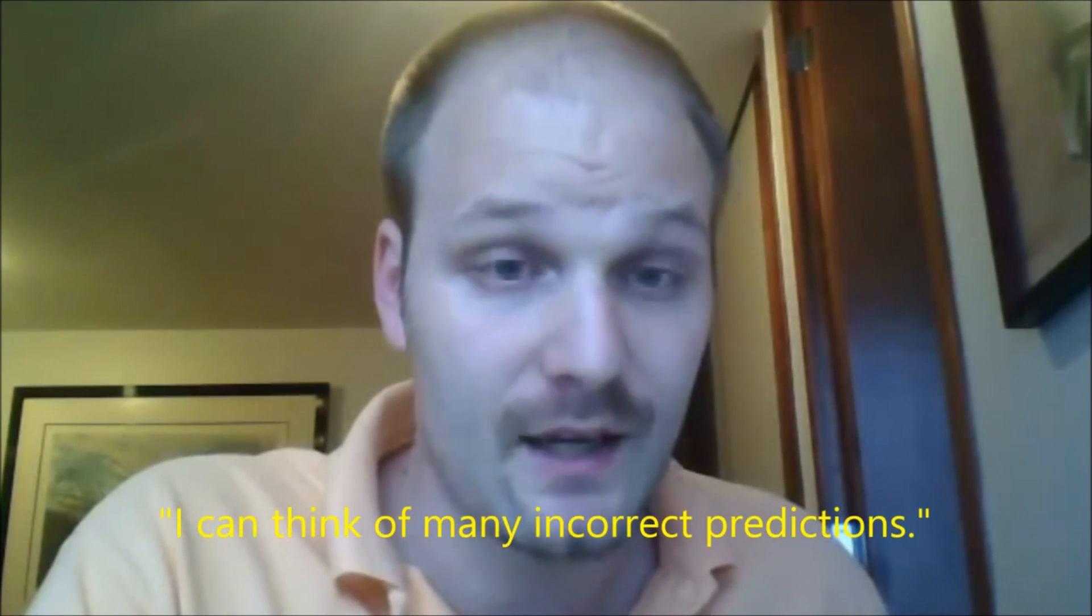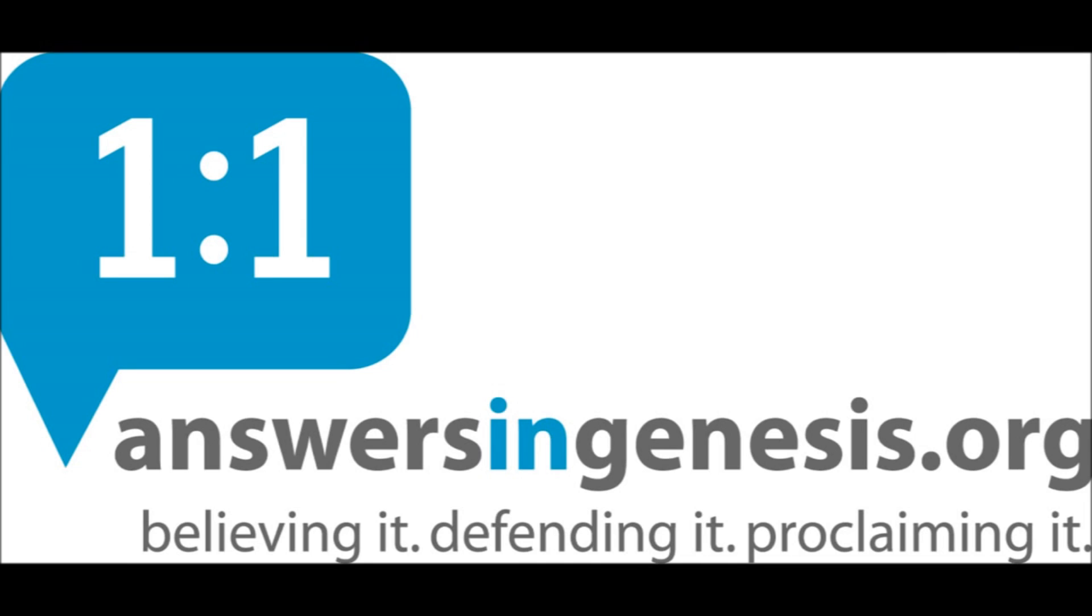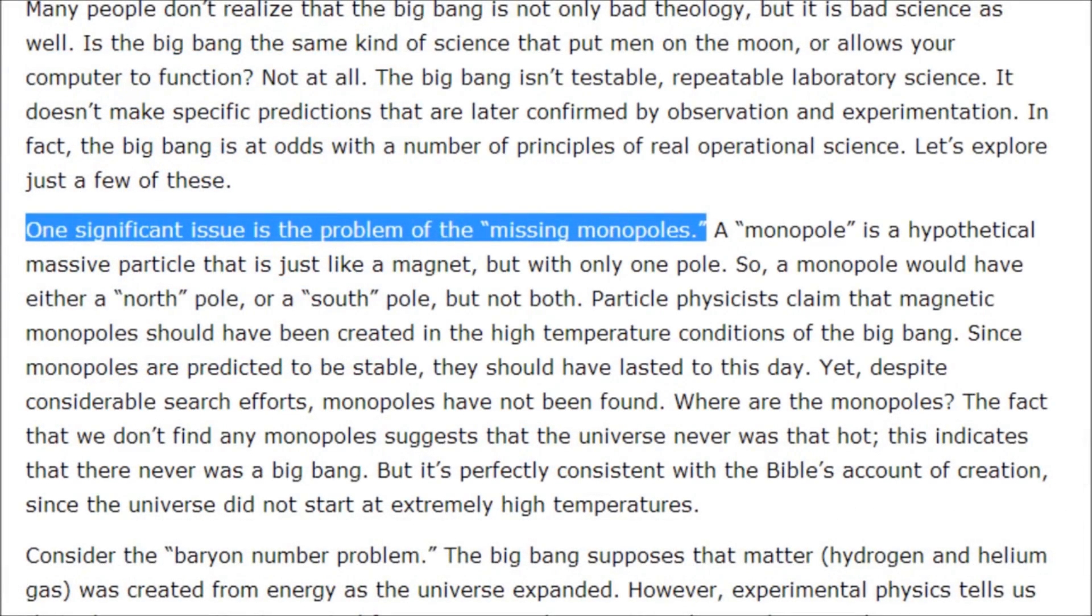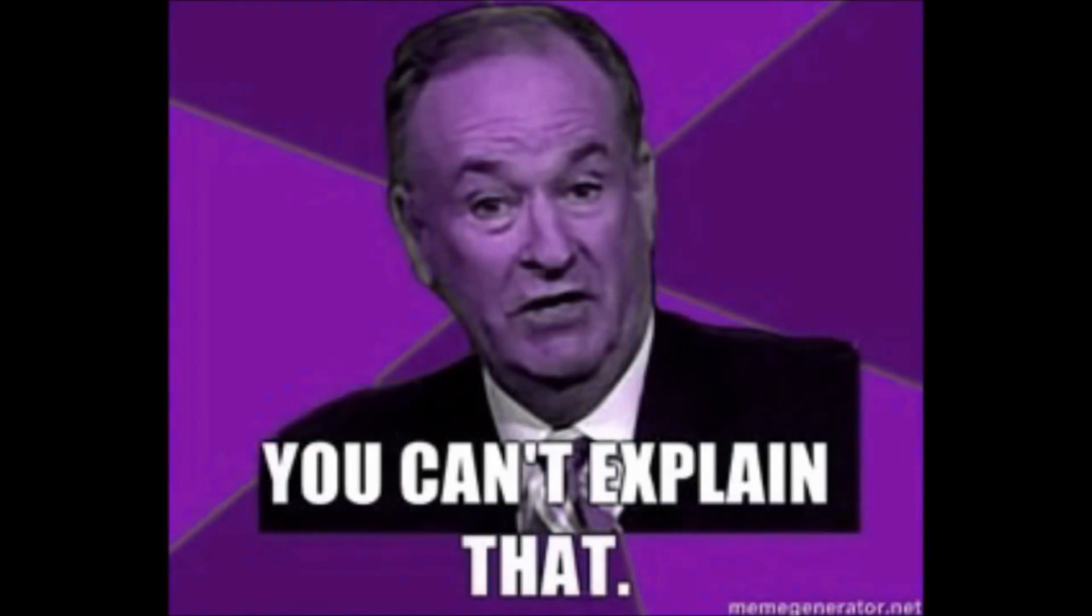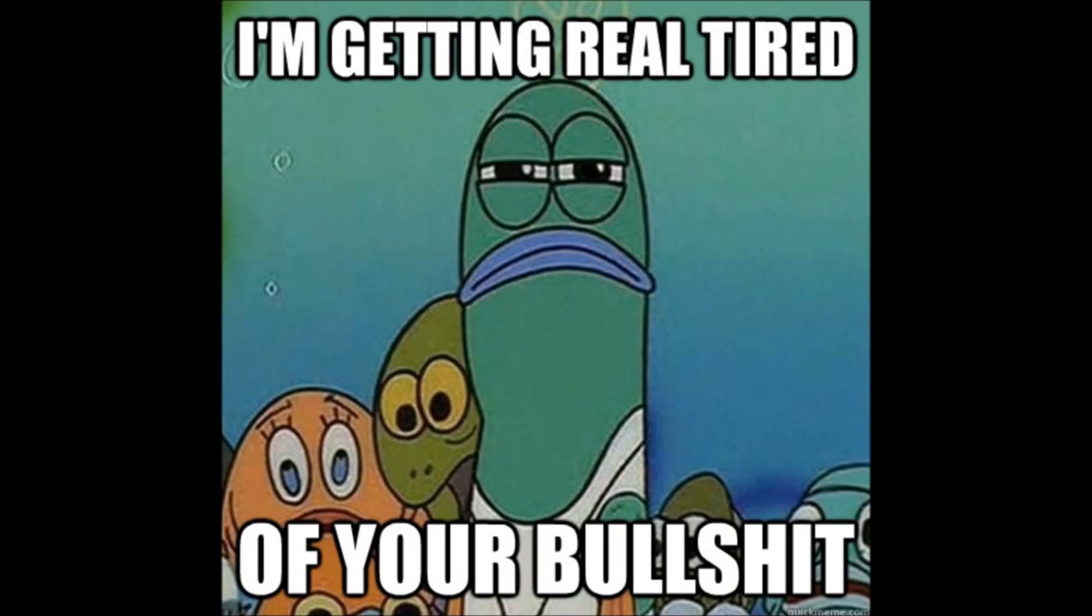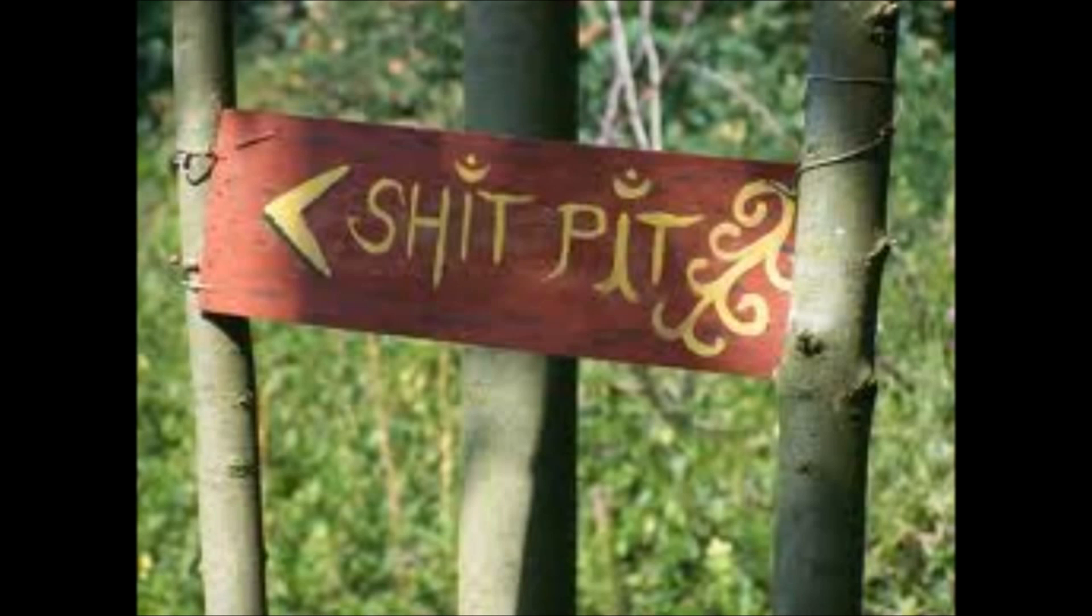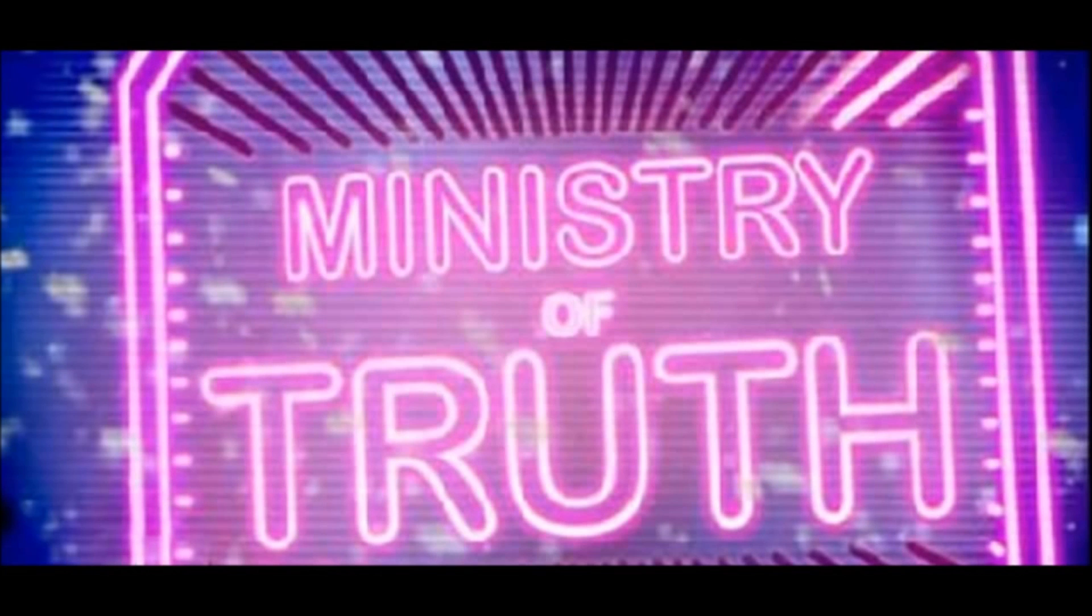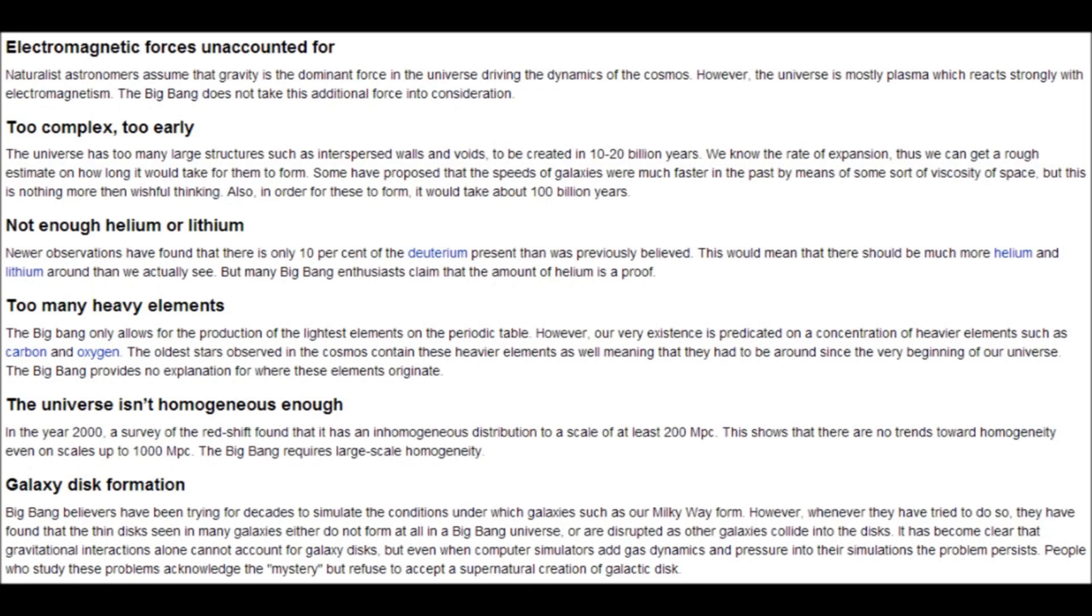I can think of many incorrect predictions. You then proceeded to list the aforementioned arguments, starting with the monopole argument. Interestingly enough, on the Big Bang page in Answers in Genesis, their very first argument against the evidence for the Big Bang is... You guessed it, missing monopoles. It's almost as if immediately after watching my video, rather than follow my sources, you jumped onto your favorite creationist websites and began desperately looking for something to latch onto. Here's the creation wiki page on the Big Bang. Six of the arguments that you presented in our exchange can be found here.